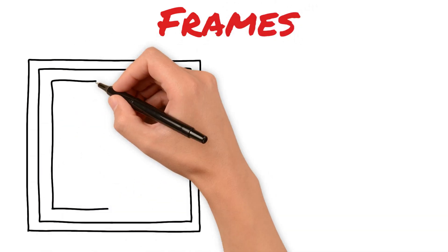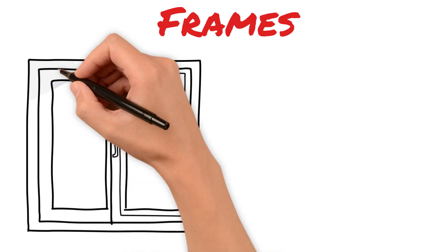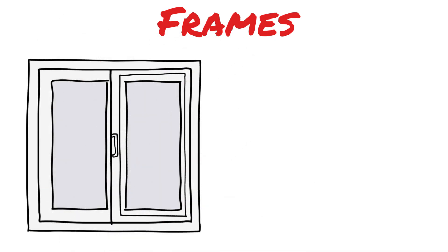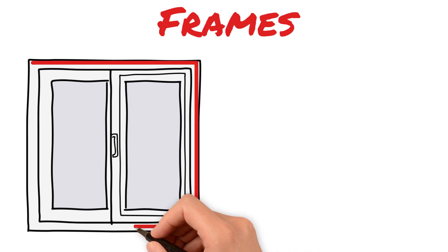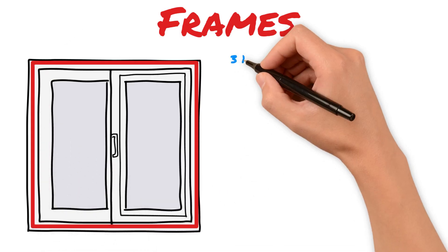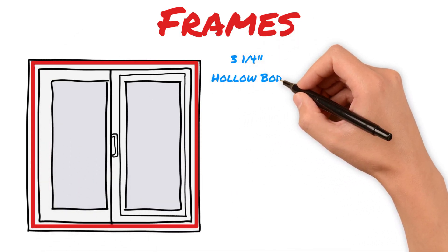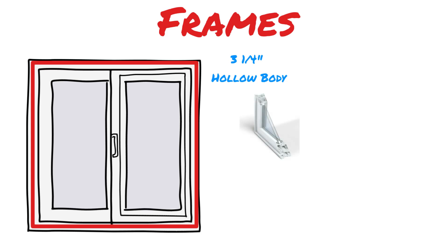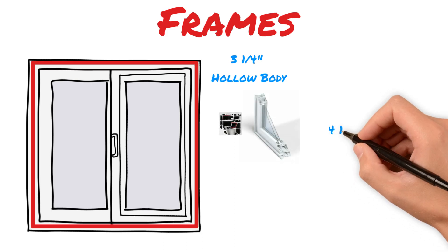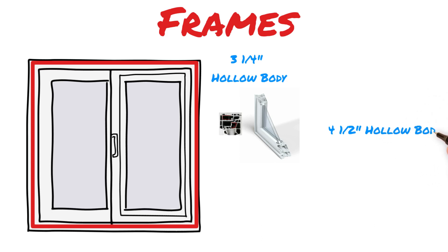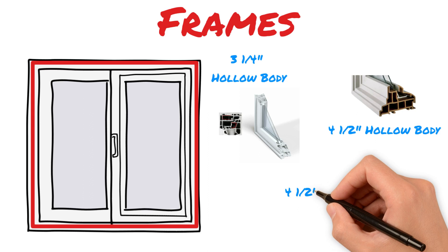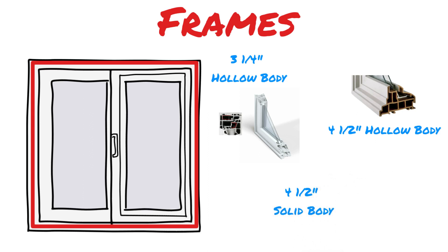Let's talk about frames. The frames of the windows are what hold the sashes in place. Windows used to have wood frames and then upgraded to aluminum, but now PVC windows are the standard. They were originally introduced in the 1980s with a 3¼-inch hollow body frame. Since then, some companies have upgraded to a 4½-inch hollow body frame due to our 2x6 wall construction. If you look for the gold standard, you would go with a 4½-inch solid body frame.